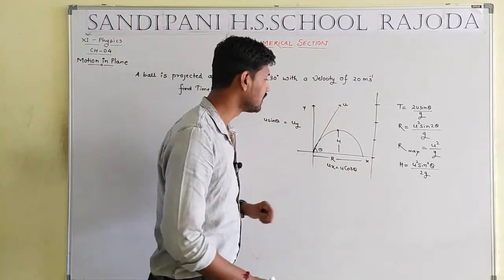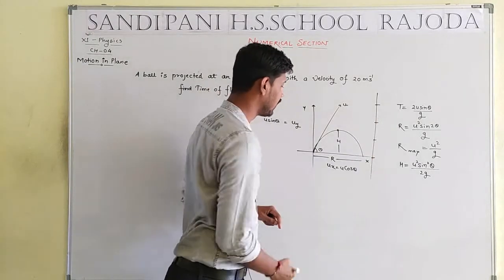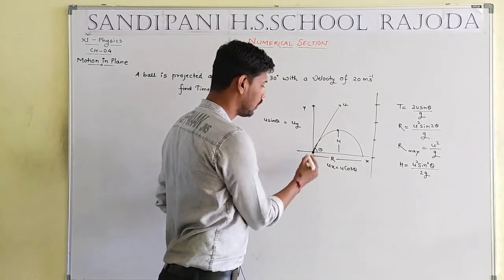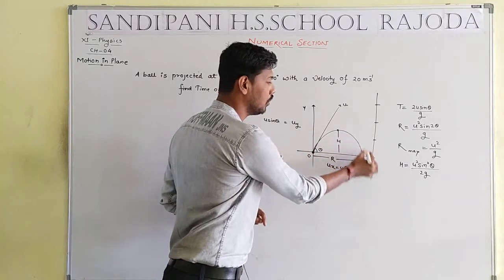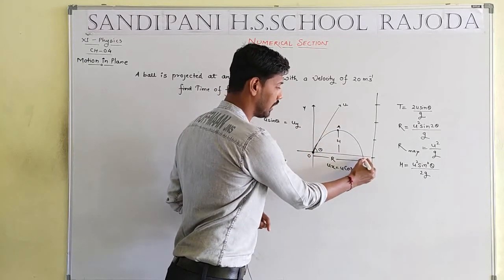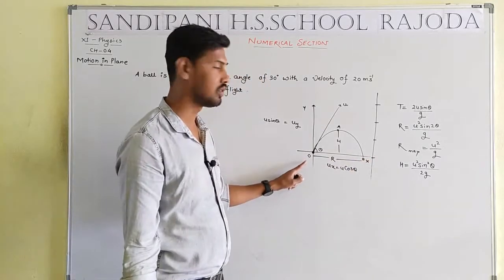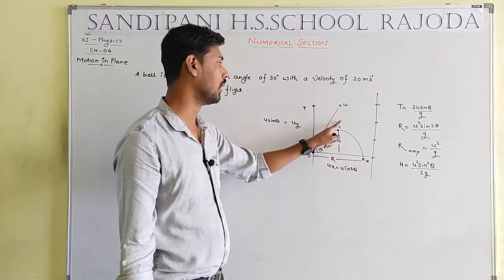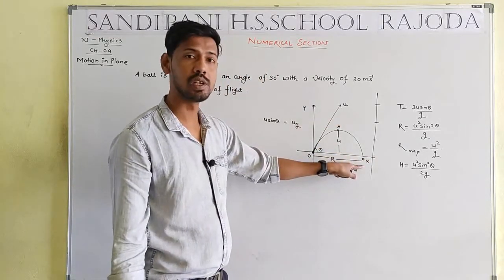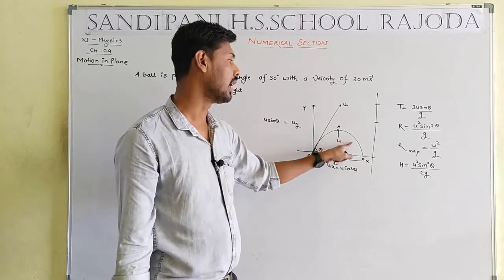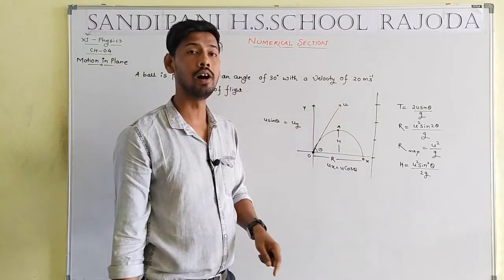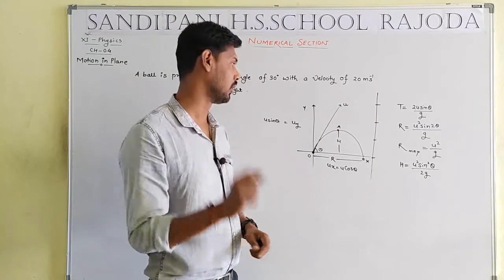Capital T means time of flight — the total time from O to A to B. The time from O to A is small t, and from A to B is also small t. Total time equals capital T, known as time of flight.